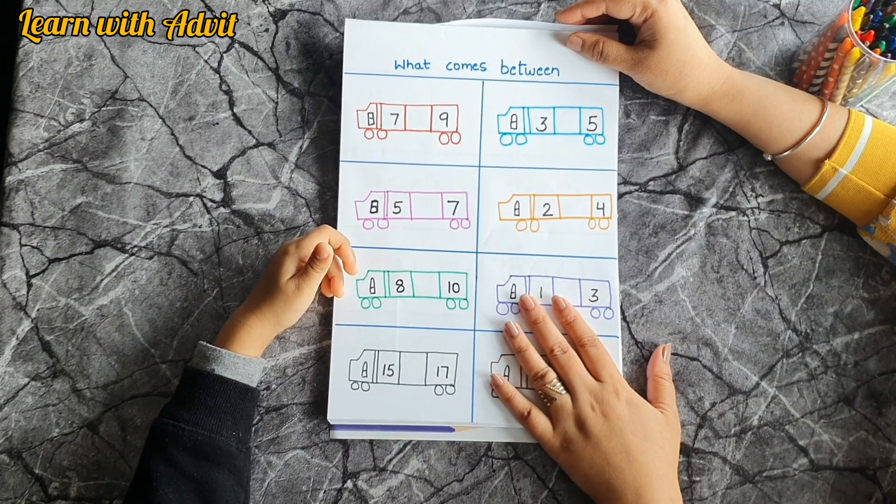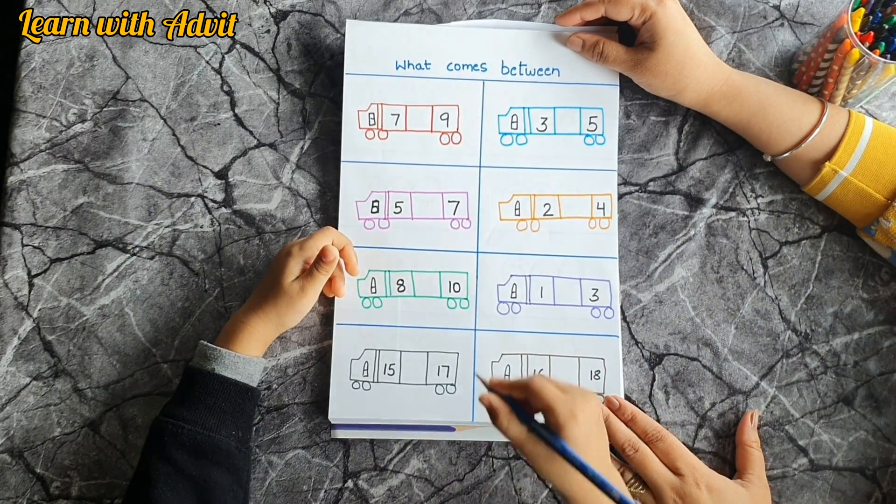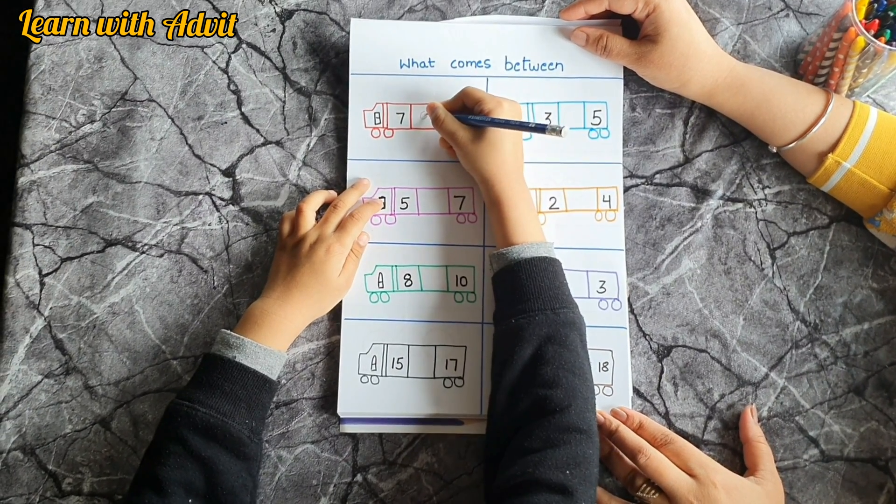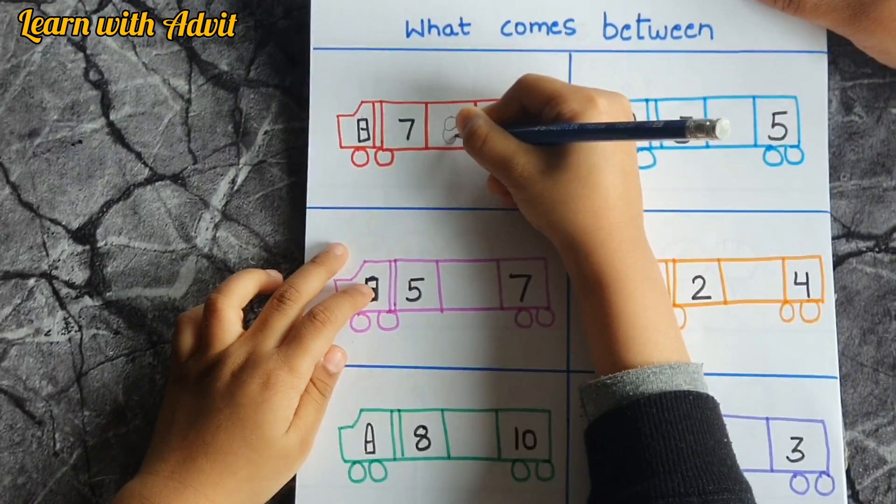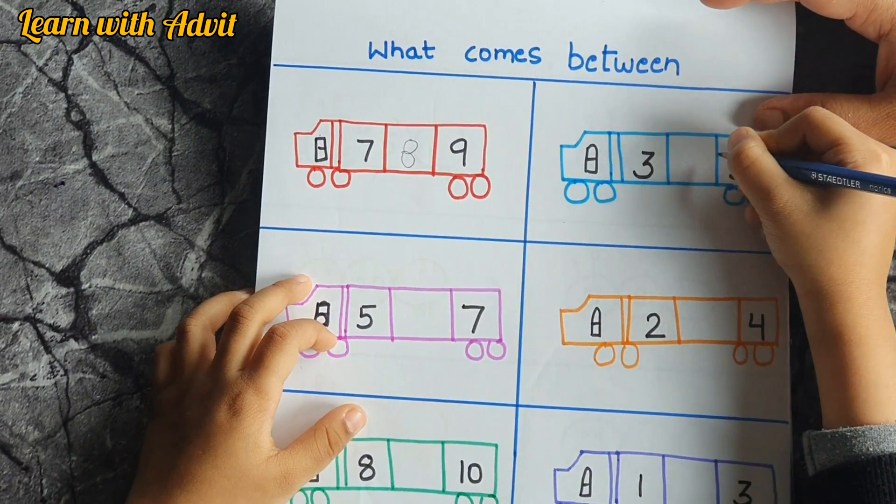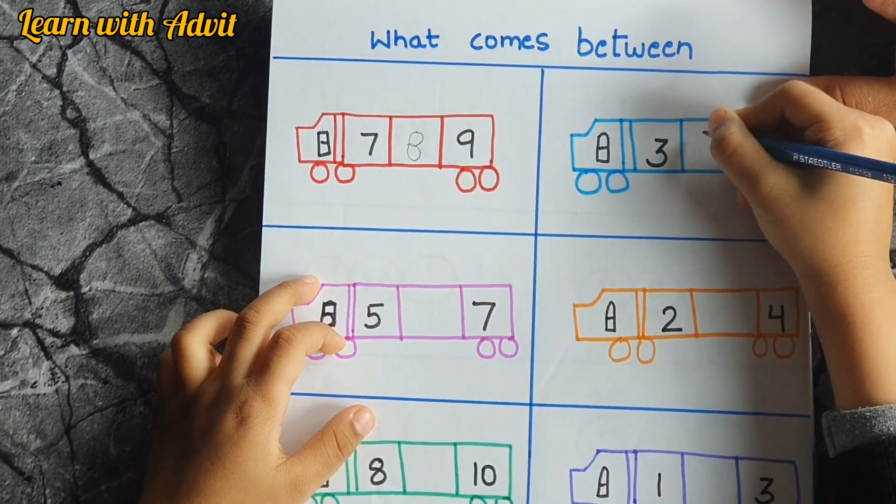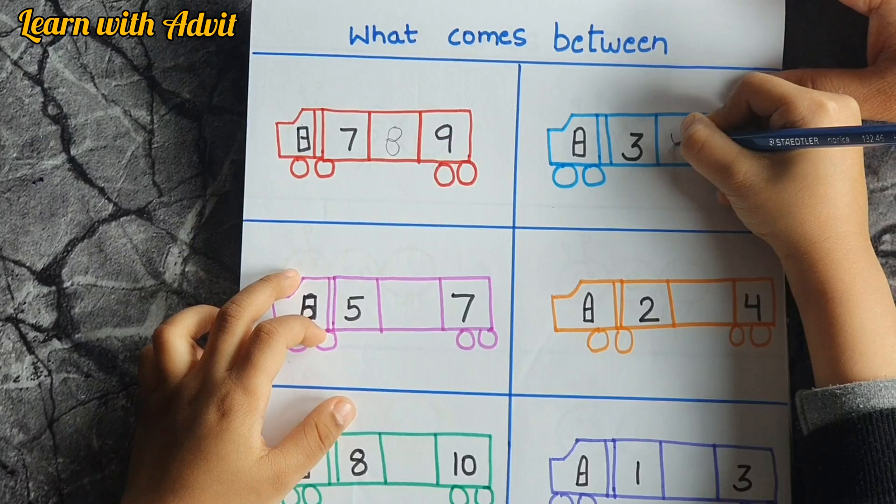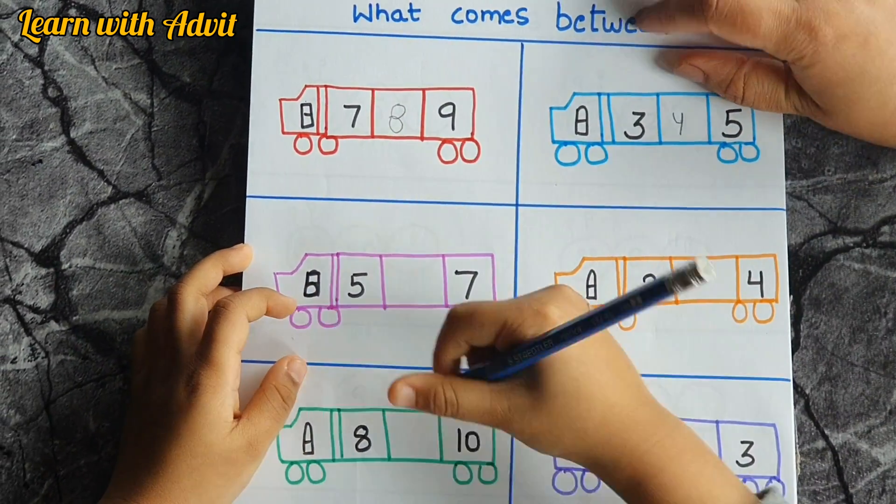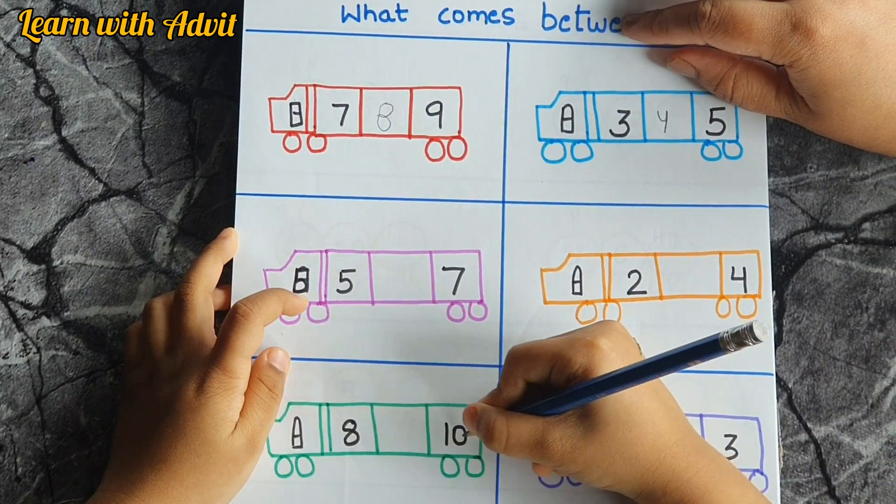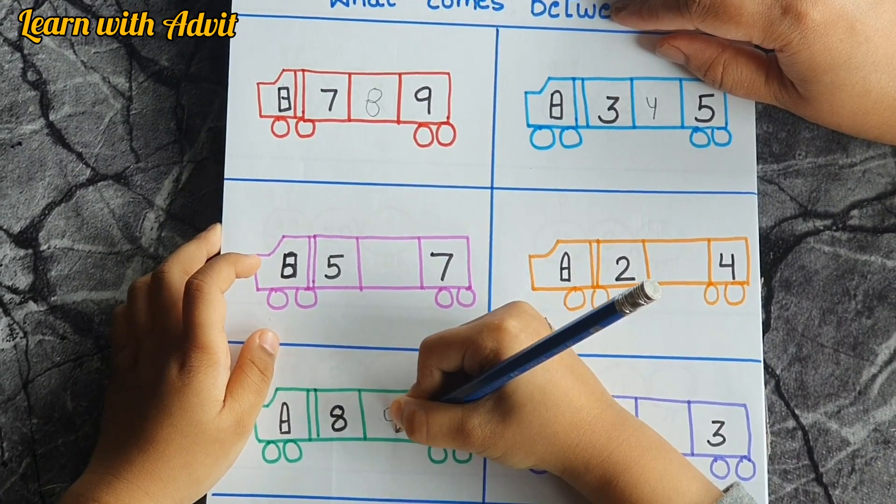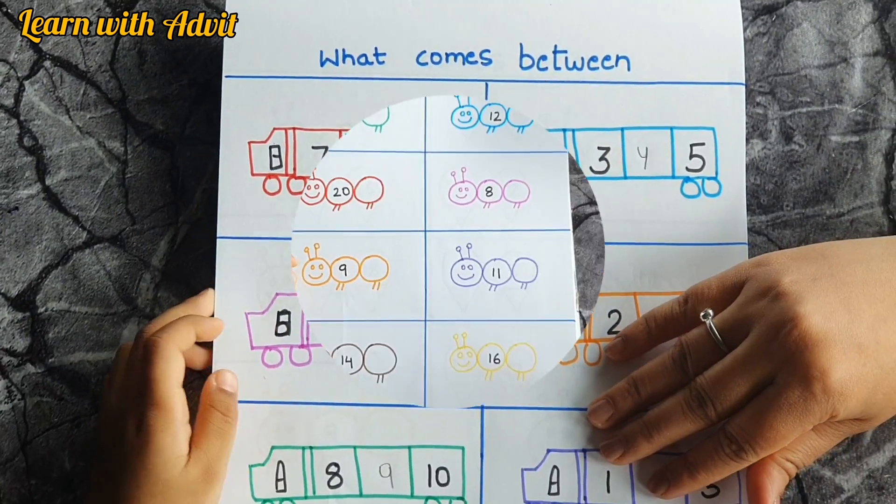Good. This sheet is about what comes between. Okay, come on, do it. Seven, eight, nine, very good. This, three, five, and between is four. Okay, this one, eight and ten, and the between is nine. Very good. Like this, we'll finish it later. Okay?